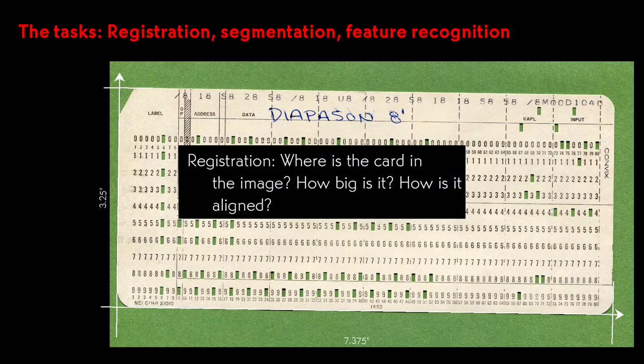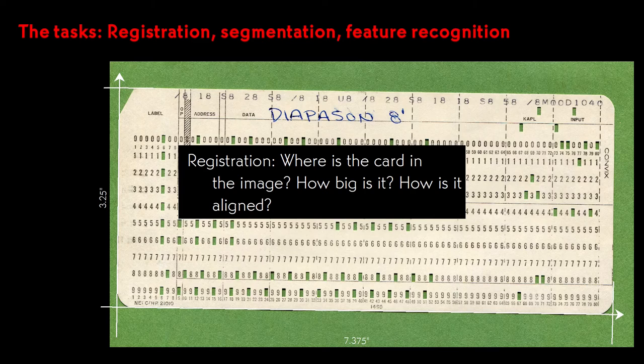Registration refers to establishing a relationship between the image and the world, or between two images. Its result is a mapping between pixel coordinates and coordinates in some other frame of reference. Here we want to tie pixel coordinates to rows and columns of the card, bearing in mind that the card may not be perfectly straight in the scanner.